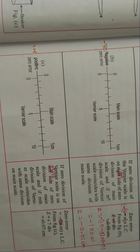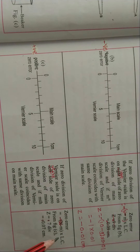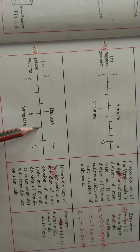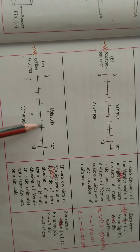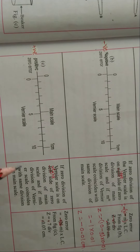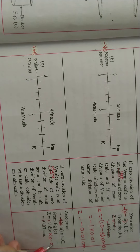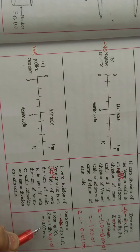For positive zero error, when the zero on the vernier scale is to the right side of the zero on the main scale, find the coinciding vernier division and multiply it by the least count. Here the 7th division on the vernier scale exactly coincides with a main scale division, so m = 7, and zero error = 7 × 0.01 = 0.07 centimeter, which is the positive zero error.